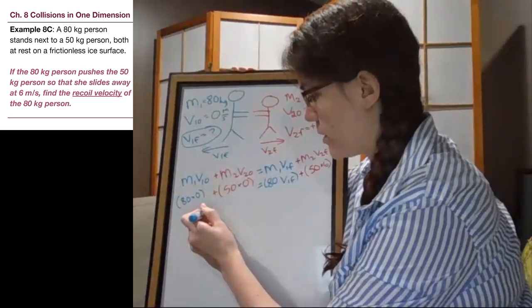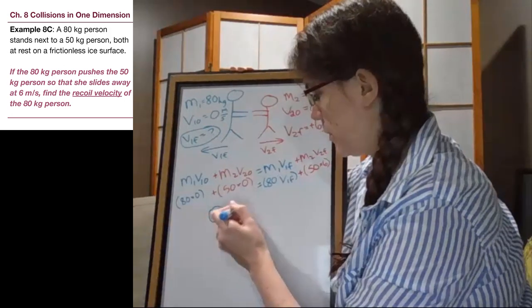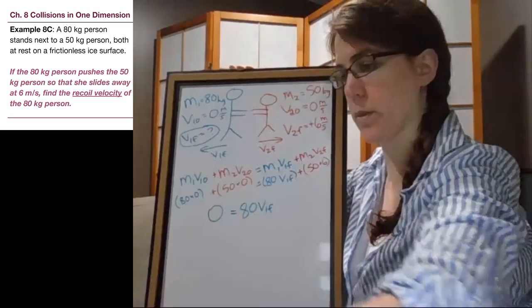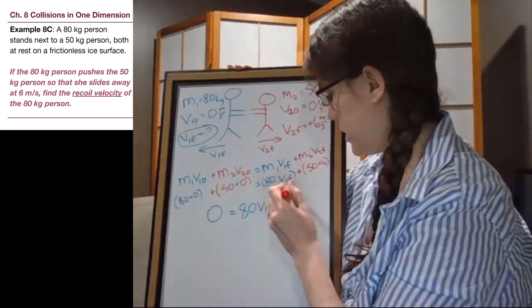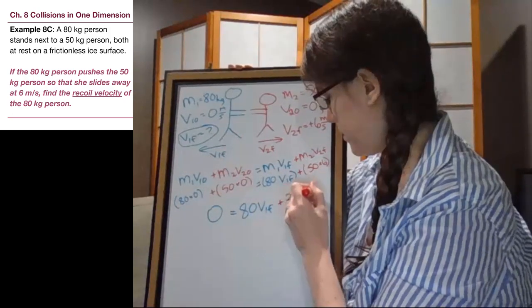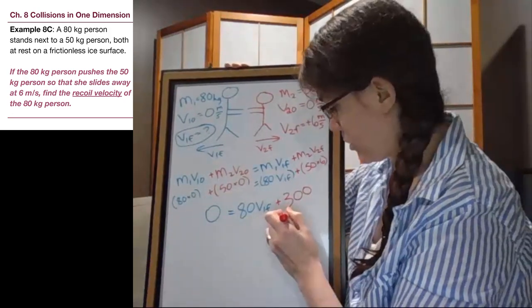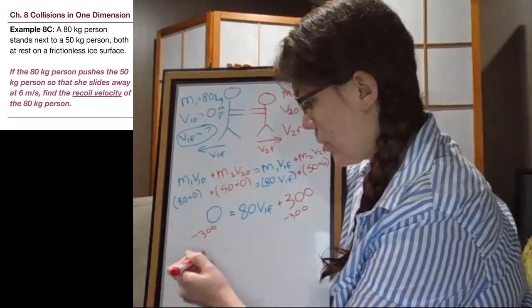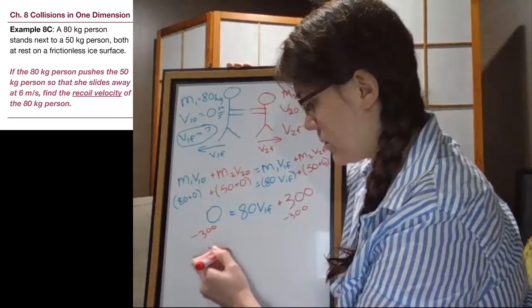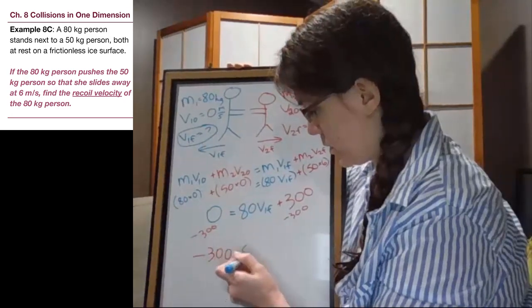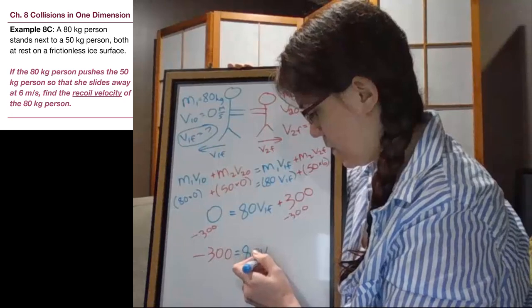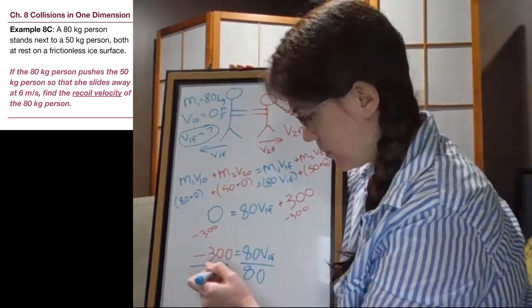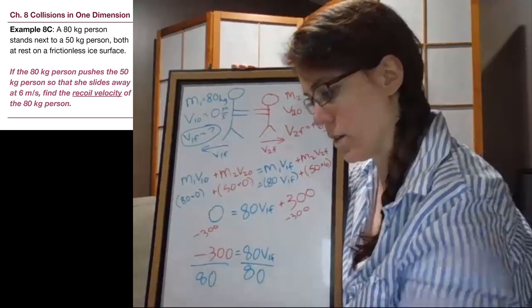All right. So on the left, this entire thing on the left is going to be 0, which equals 80 V1 final plus 50 times 6 is 300. So to solve for V1 final, we'll subtract 300 from both sides. So we end up with negative 300 is equal to 80 V1 final. So we divide both sides by 80.